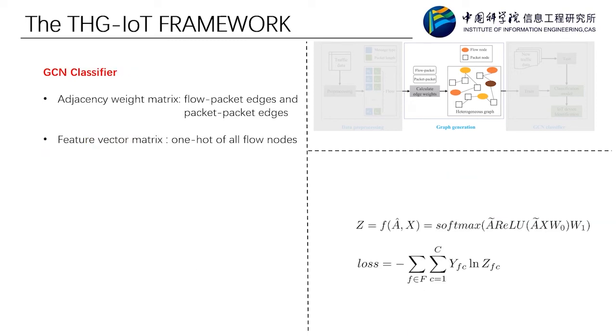The third module, GCN classifier. We take the generated THG as the input of a two-layer GCN network. The adjacency weight matrix is obtained by the weight of the flow-packet edges and the packet-packet edges. And the feature vector matrix is composed of the one-hot encoding of all flow nodes. The output of the first layer of GCN passes the ReLU activation function. And the output of the second layer passes through the softmax to get the classification result label.